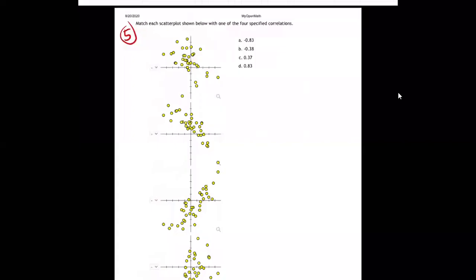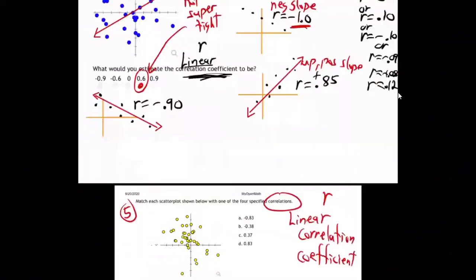So here we are on this question. They're asking us to match each scatter plot shown below with one of the four specific correlations. When they say correlations, they mean linear correlation coefficient R. We call it R. There's no R anywhere in this question.